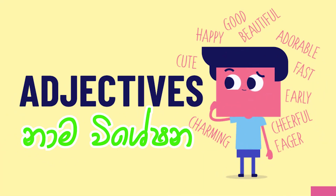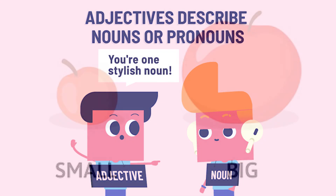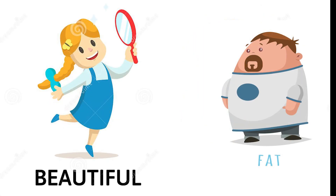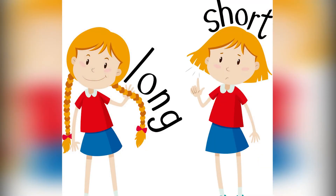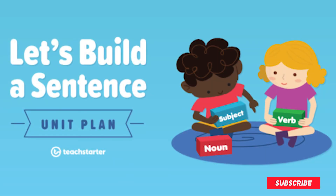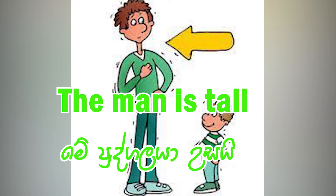Using adjectives — adjectives describe nouns. Some useful adjectives: big, small, beautiful, fat, long, colorful. You can use adjectives in picture descriptions. For example: The library is big. The man is tall.